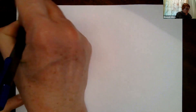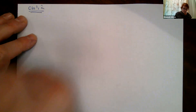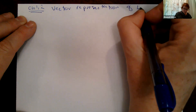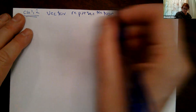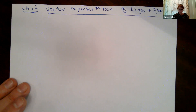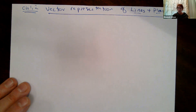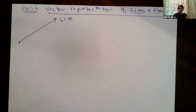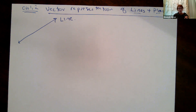Chapter 1.2 is all about the vector representation of lines and planes, though we'll mostly focus on lines. When we've talked about straight lines before in algebra — y equals mx plus b — we're bound to a coordinate axis. But if I can represent a line using a vector, it takes it out of coordinate space and gives more power for manipulation.